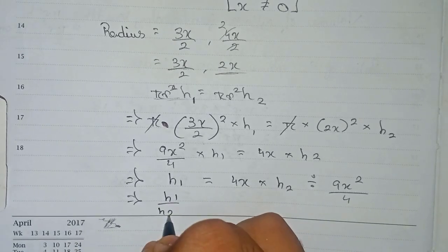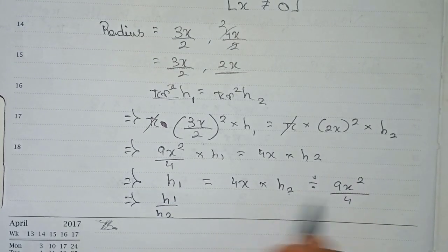So h1 by h2, we're taking h2 to this side so it goes for division here.